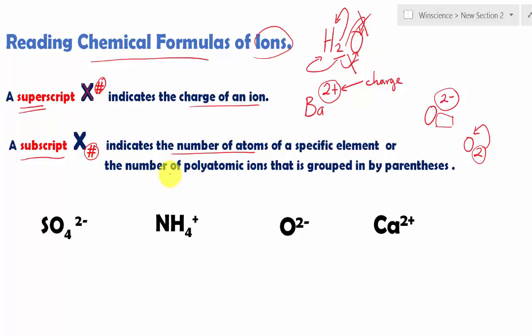Sometime, when we have polyatomic ions, we have to group them in parentheses because polyatomic ions is a group of atoms that combine together and function as a unit. And we're going to show you some examples.